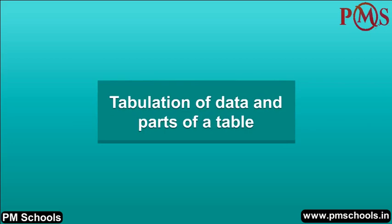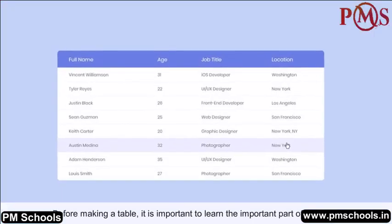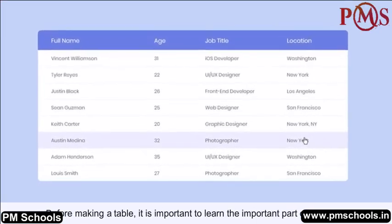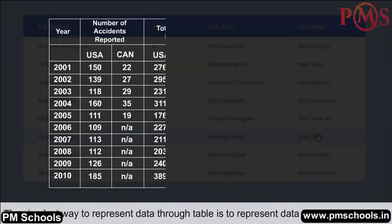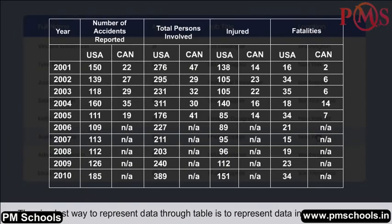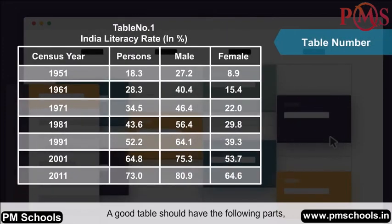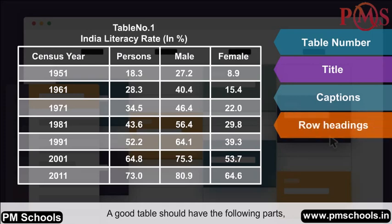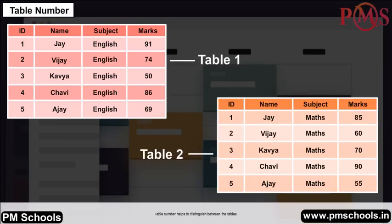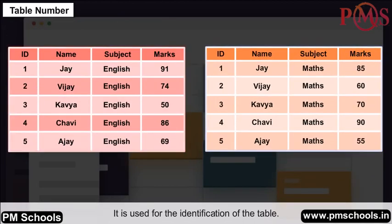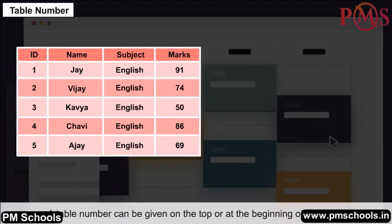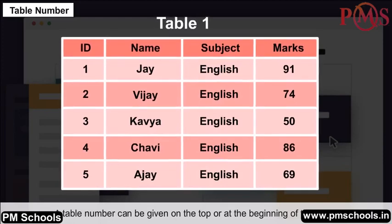Tabulation of data and parts of a table: Before making a table, it is important to learn the important parts. A good table should have the following parts: table number, title, captions, row headings, body of table, and source. The table number helps to distinguish between tables and is used for identification; it is given on the top or at the beginning of the table.